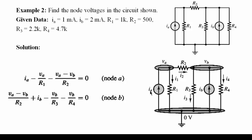We can see that the current IA is entering node VA, so we write plus IA. This current is leaving node VA, so we write minus VA over R1. This current is also leaving the node, so we write minus VA minus VB over R2, and the expression equals zero.